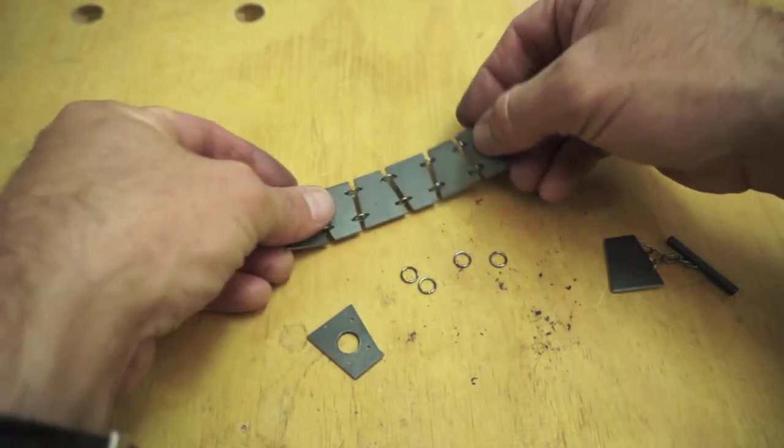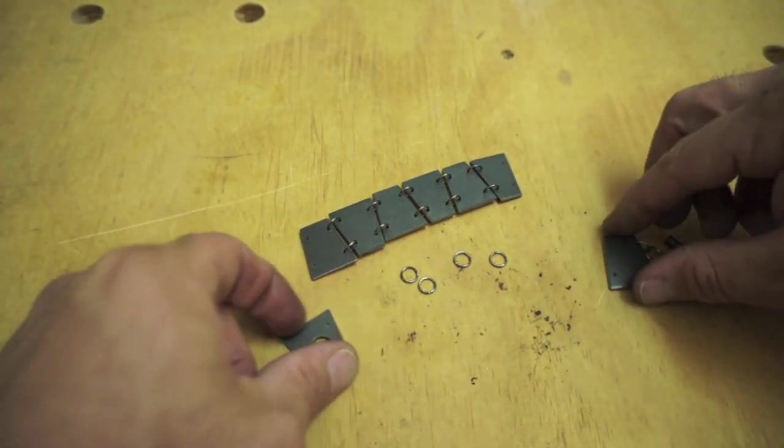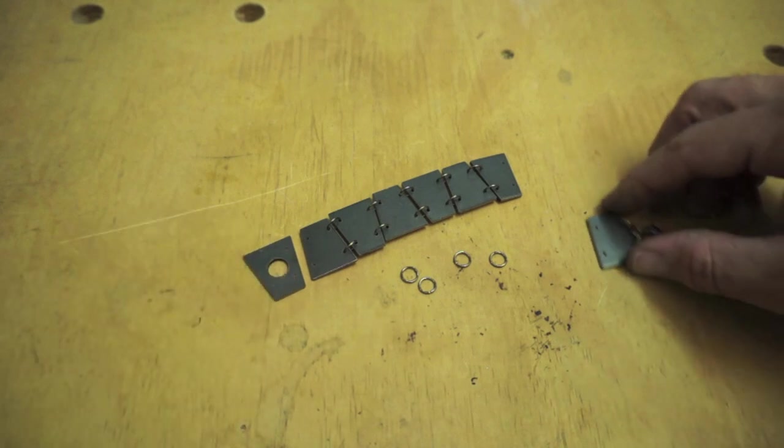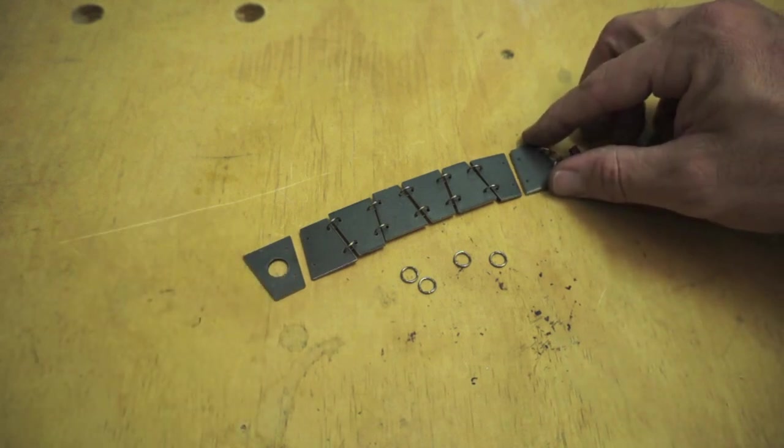This is going to be the female end of the clasp, and this is going to be the male end. As you can see, I've just used these connector rings to connect all these pieces.